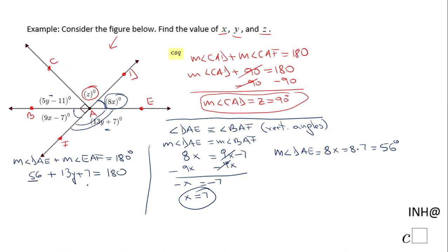We need to combine these two numbers and we have 13y plus 63 equals 180. We're going to subtract 63 on both sides and we have 13y equals 117. We're going to divide by 13 both sides and we end up with y equals 9.